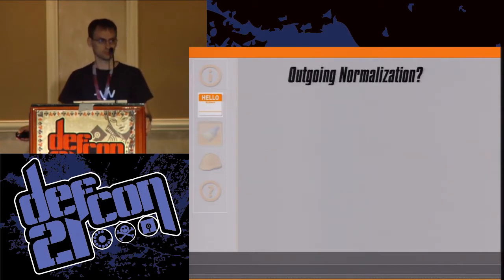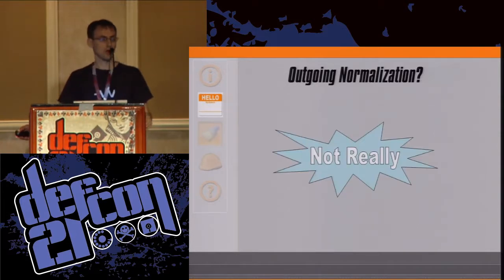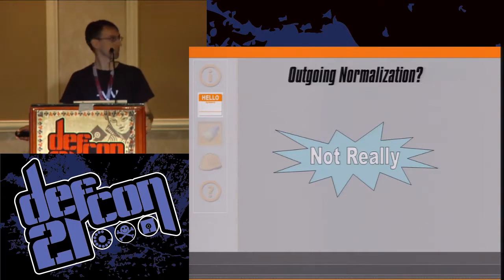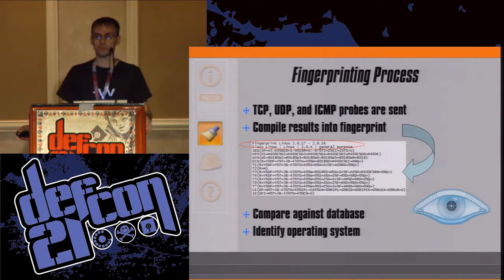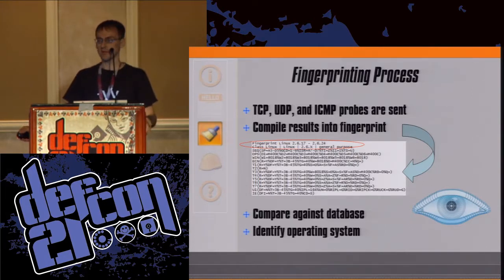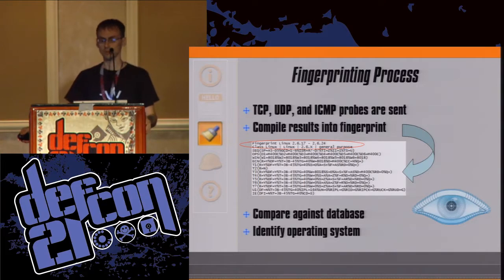Outgoing or transit normalization hasn't really been discussed before as a solution. There's certainly nothing out there talking about preventing fingerprinting. So when you look to prevent fingerprints, it's important to take a look at that fingerprinting process. And since NMAP is a major theme of this talk, this is where I began — looking at NMAP and its process for fingerprinting targets.